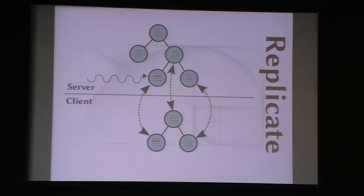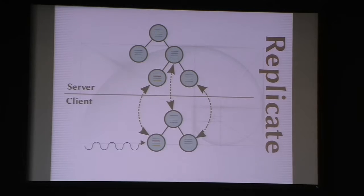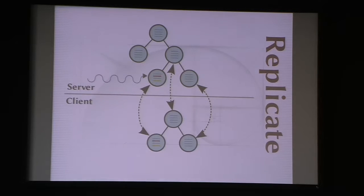If we send a message to our object on the client, it executes its behavior there on the client. If it changes an instance variable, GBS will automatically synchronize that change in state up to the server. That's what replicates do — they're a state-synchronized copy. And if server-side Smalltalk execution changes an instance variable on the server, that gets synchronized down to the client. So it works both ways; they're fully synchronized in both directions. A relatively new feature — maybe five years old — is that you can actually arrange for a message to be forwarded through a replicate.